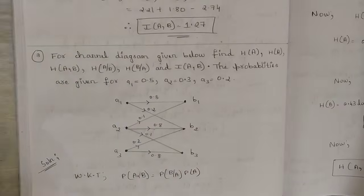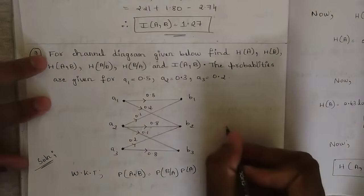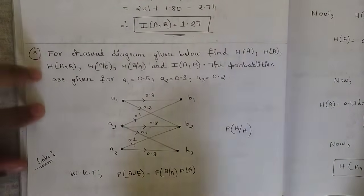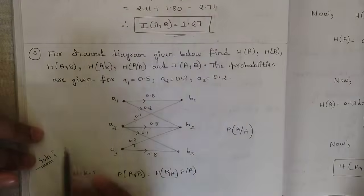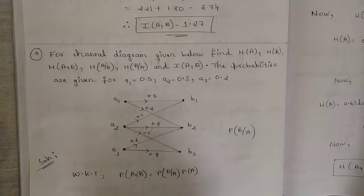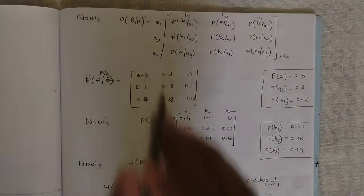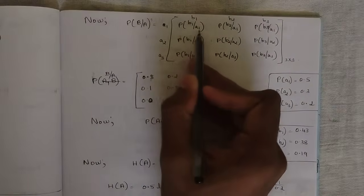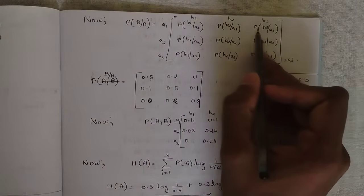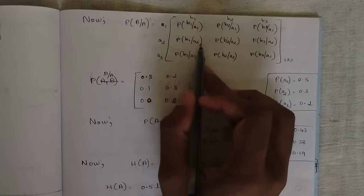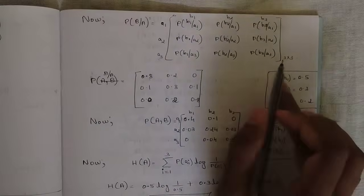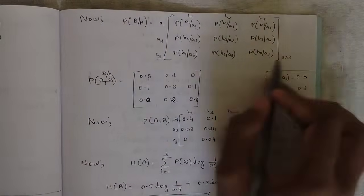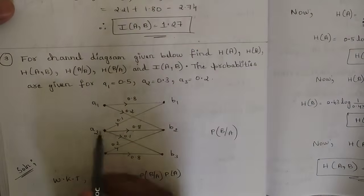The channel matrix is given in terms of P(B|A). Here you write the channel matrix with respect to the channel diagram. P(B|A) is written as: P(B1|A1), P(B2|A1), P(B3|A1), P(B1|A2), P(B2|A2), P(B3|A2), and so on — since we have three rows and three columns corresponding to A1, A2, A3 and B1, B2, B3.